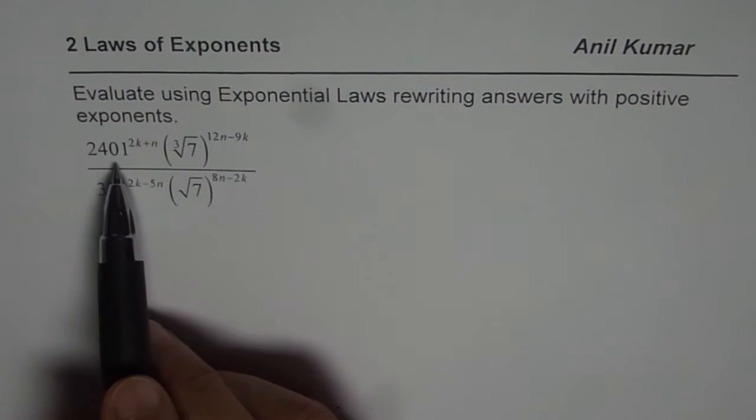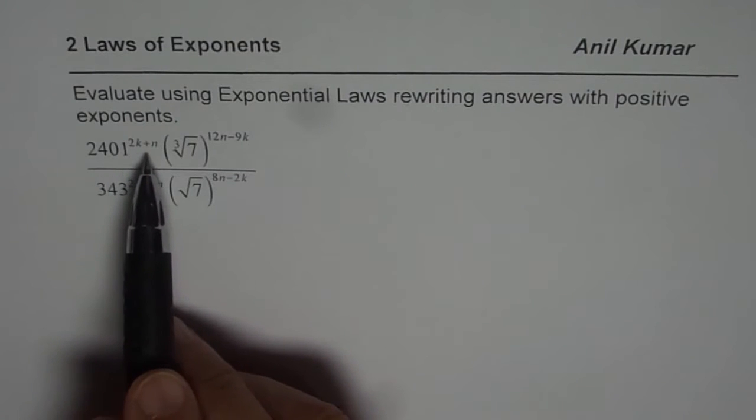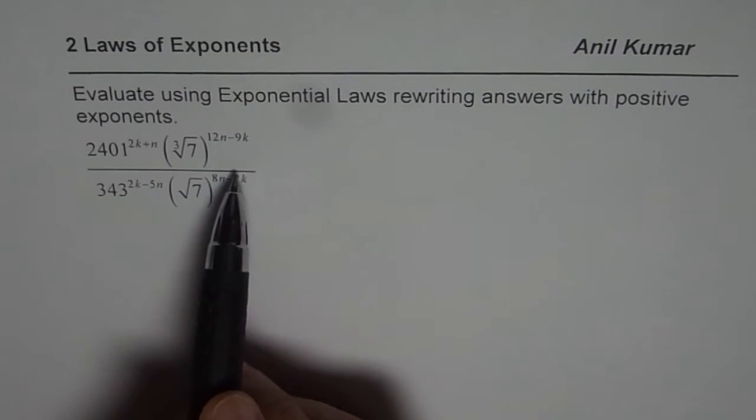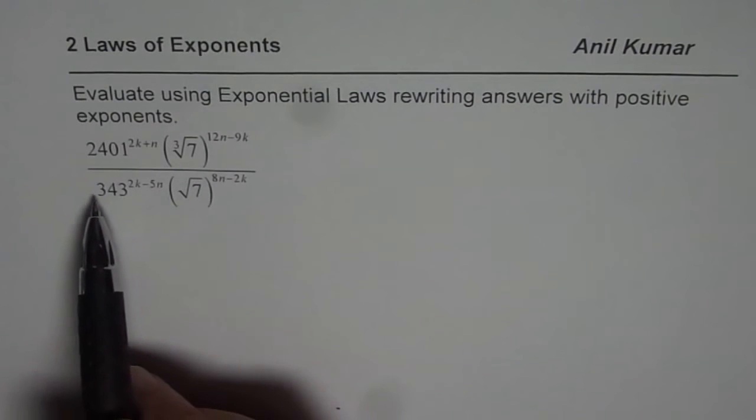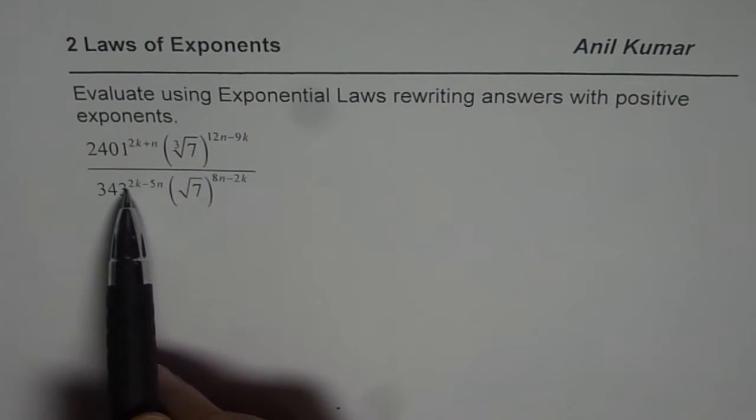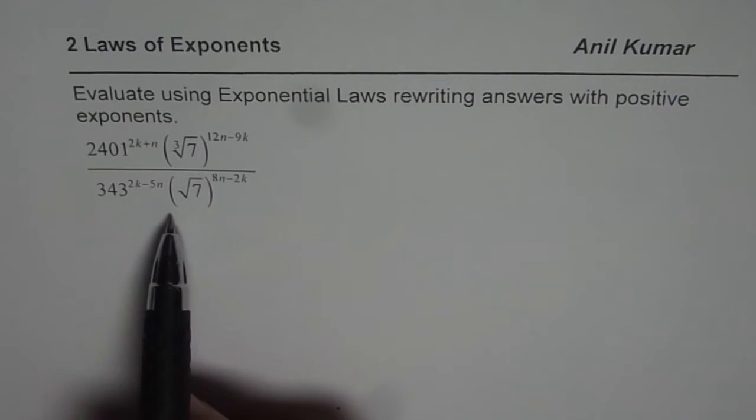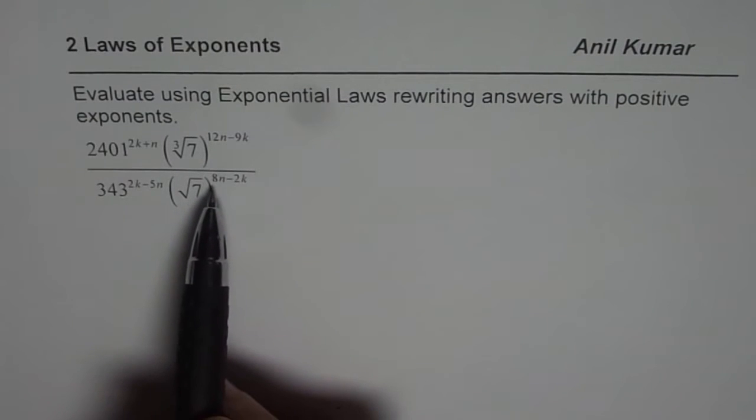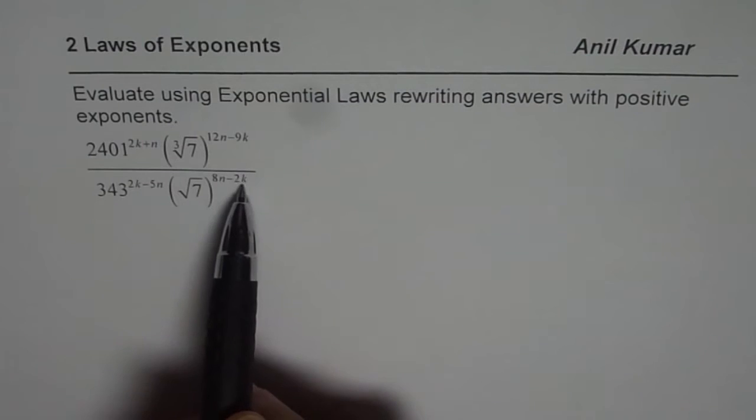The question is: 2401 to the power of 2k plus n, cube root of 7 to the power of 12n minus 9k, divided by 343 to the power of 2k minus 5n, square root of 7 to the power of 8n minus 2k.